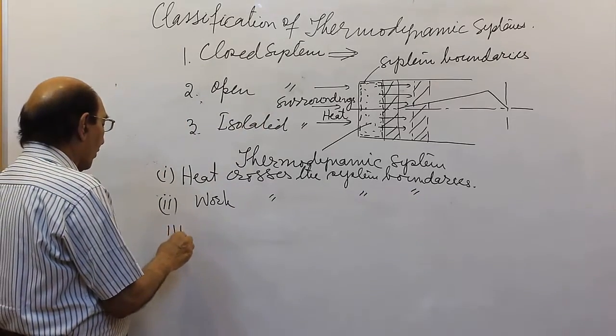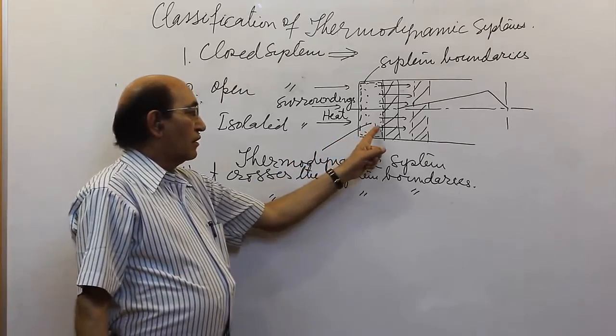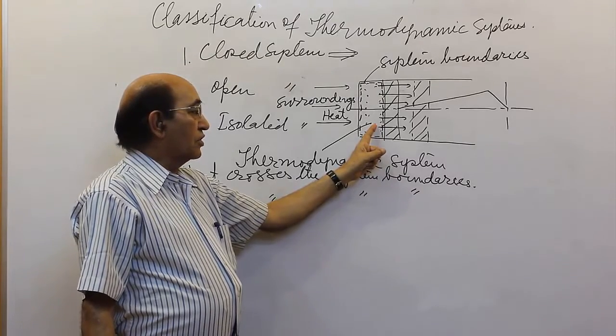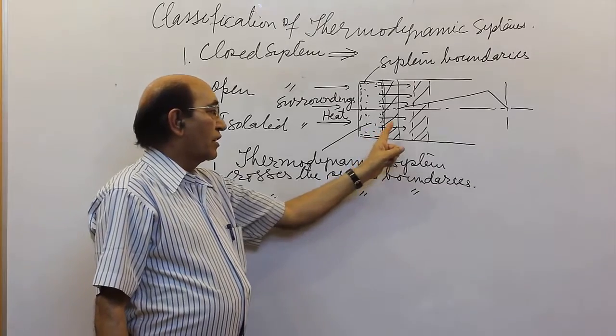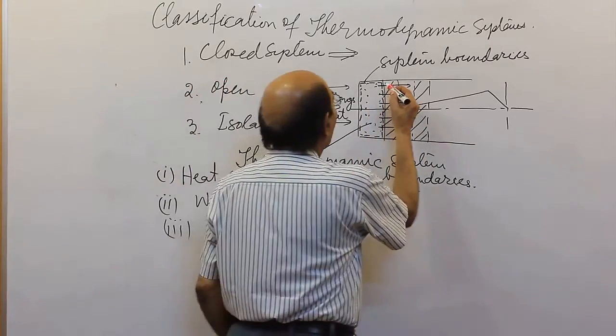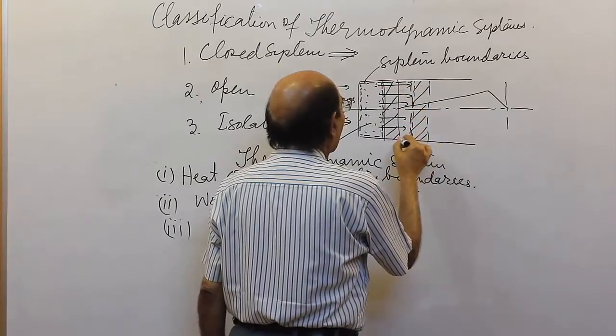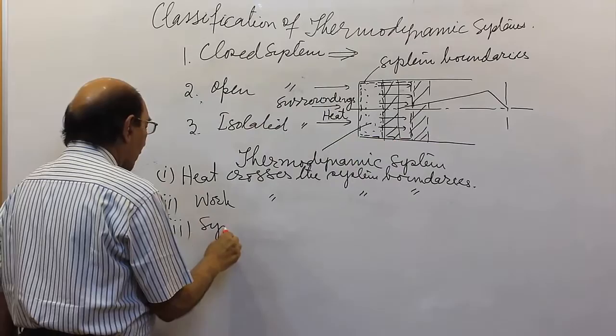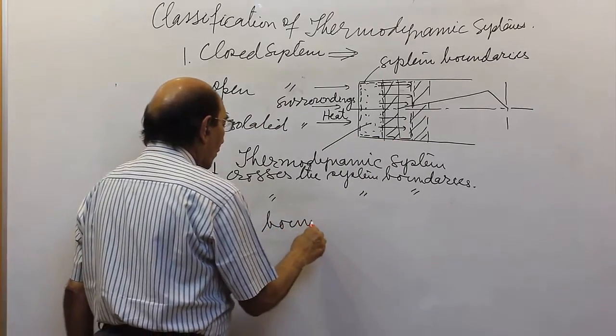How about the boundaries? The boundaries which we selected earlier, they were just arbitrarily chosen. Now depending upon this process, the boundaries do not remain same and get shifted to these boundaries. So I will say system boundaries do not remain fixed.